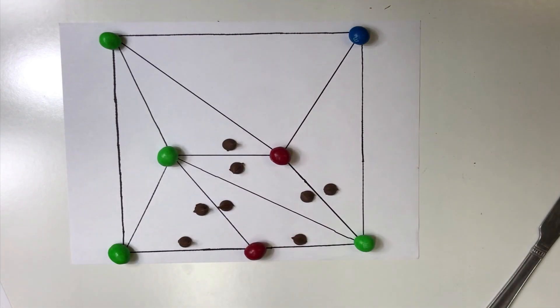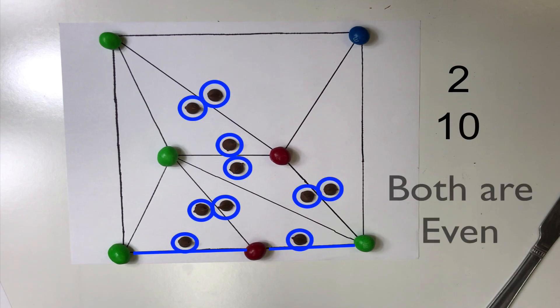Each red-green edge on the perimeter has only one pebble next to it. Every other edge has either zero or two pebbles. Because every other edge adds an even number to the total number of pebbles, this keeps the parity of the number of pebbles the same.